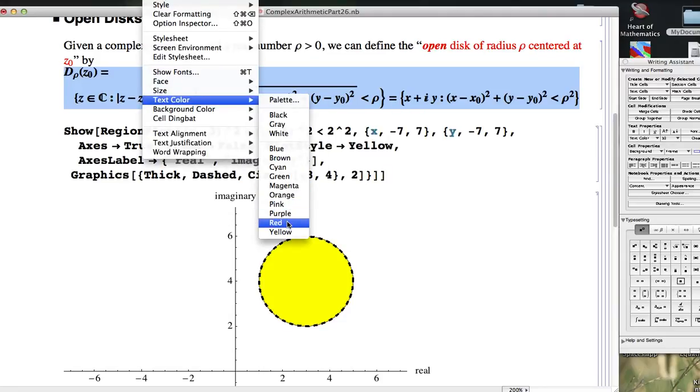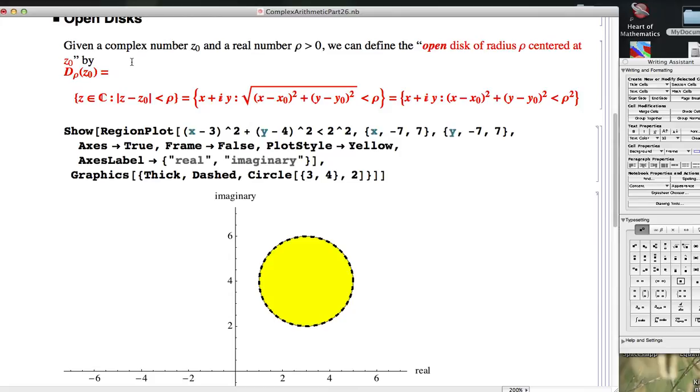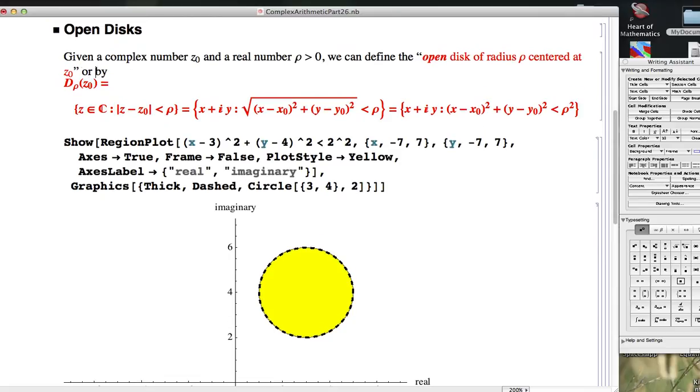Another term that people use for this is a circular neighborhood of radius ρ centered at z₀.